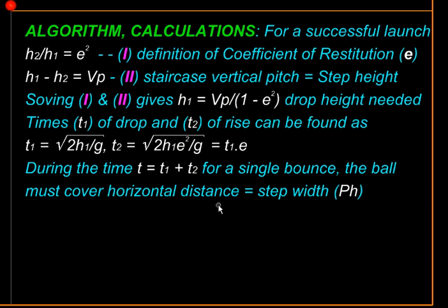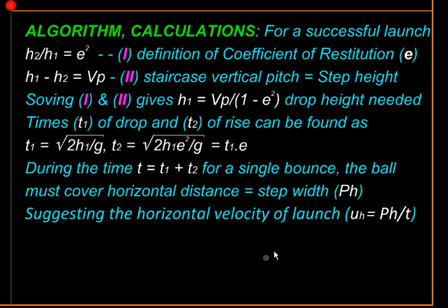During this time, the ball is also going to move forward with a steady horizontal velocity because it has no horizontal acceleration. And it will cover a distance that is equal to the width of a step or the horizontal pitch of the staircase. So we can calculate the steady horizontal velocity of the ball, which will be equal to ph, the distance it covers, divided by the time t. So this is the velocity with which we must launch it in a horizontal direction.